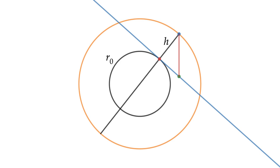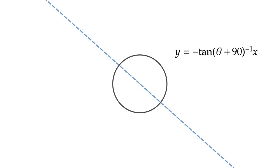We can also represent the path of the top of the stick with the circle of radius R1, which is equal to R0 plus H. First, let's create a line tangent to R0. We can create a line representing the stick with y equals tan theta plus 90x. We can then rotate that 90 degrees by turning it into y equals negative tan theta plus 90 to the negative 1x.